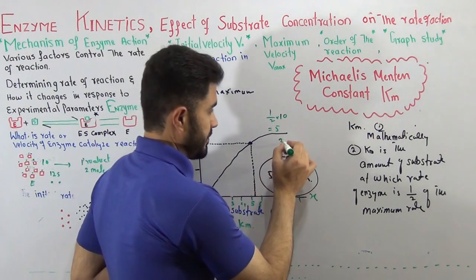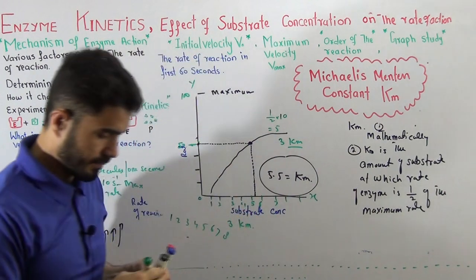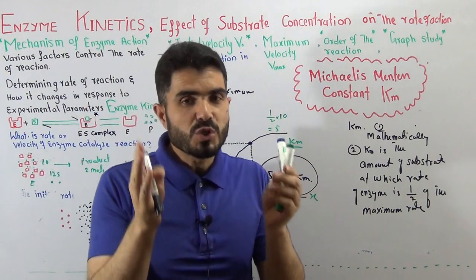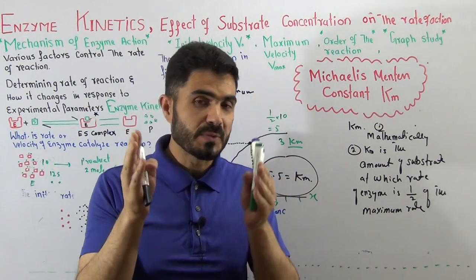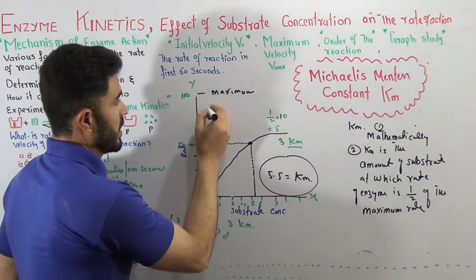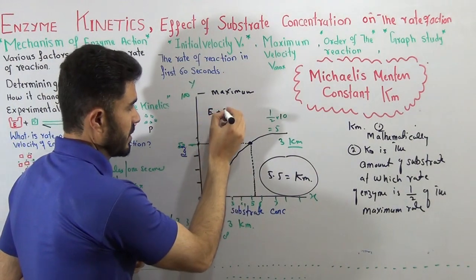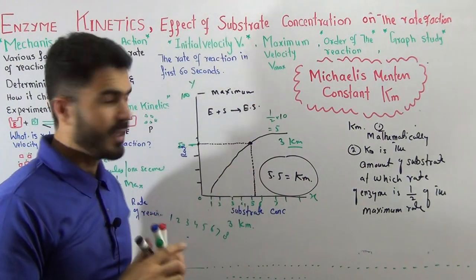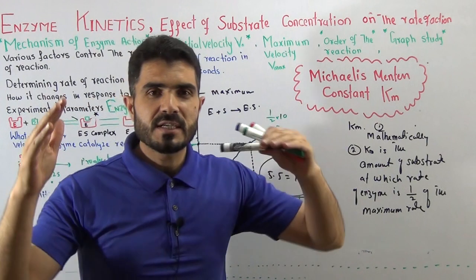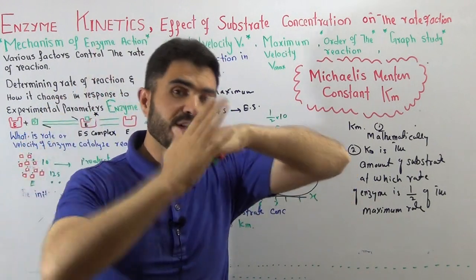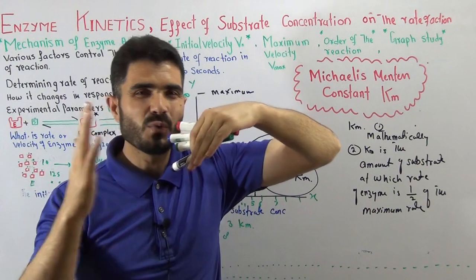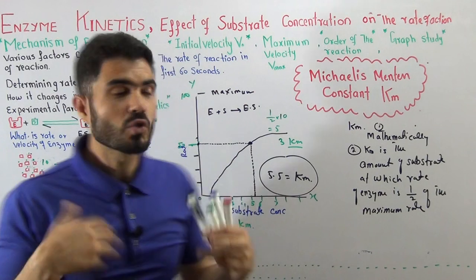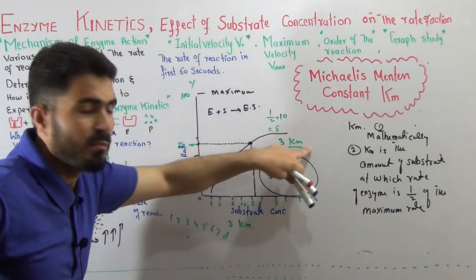What Km tells us? The affinity between the enzyme and the substrate. You know, enzyme combines with substrate to form enzyme-substrate complex. Whether sometimes a substrate has a good affinity with the enzyme or sometimes the substrate has a weak affinity with enzyme. In all these cases, we must find. So who will tell us? The Km will tell us.